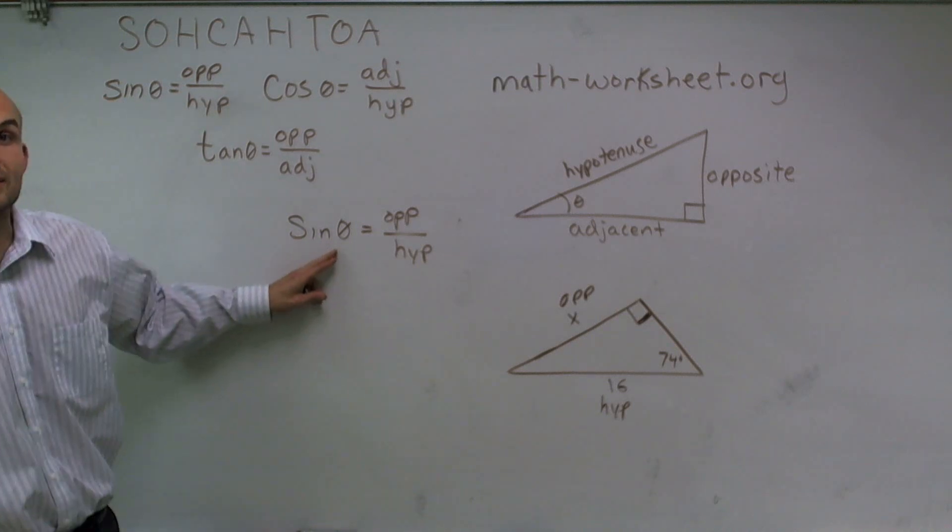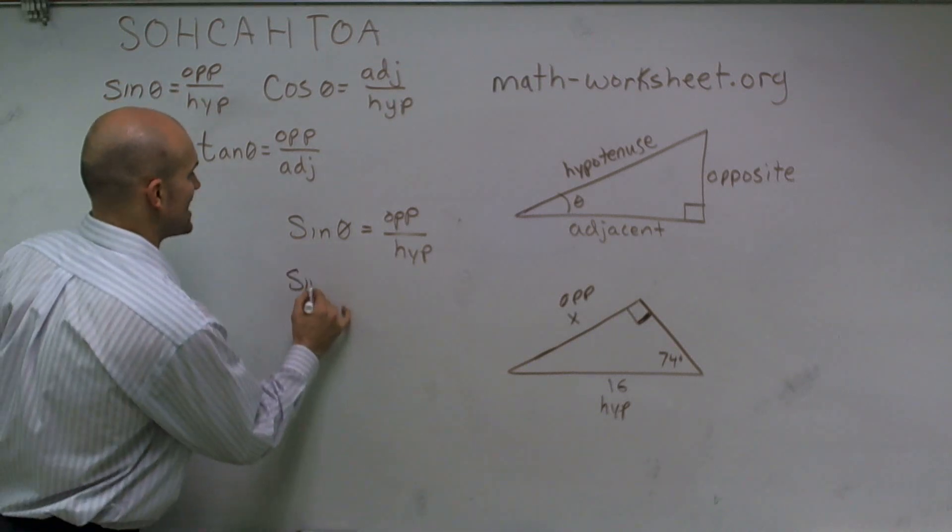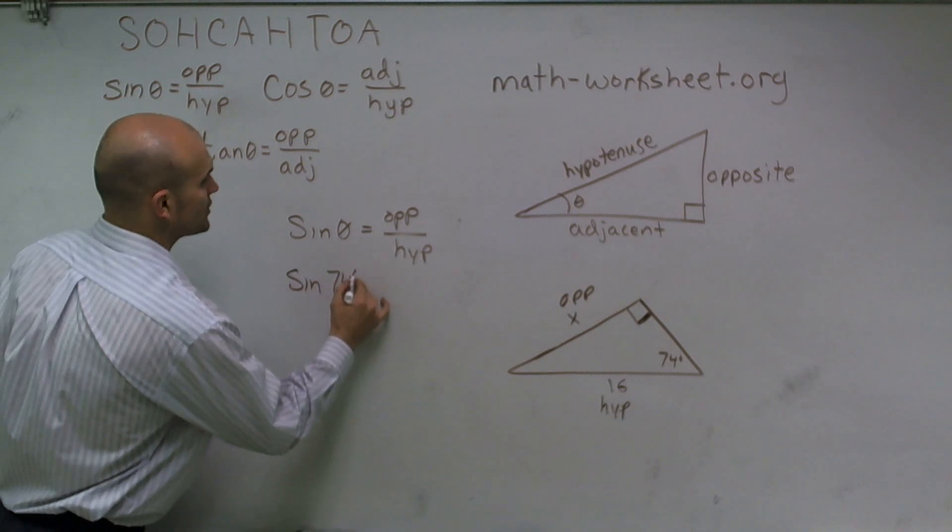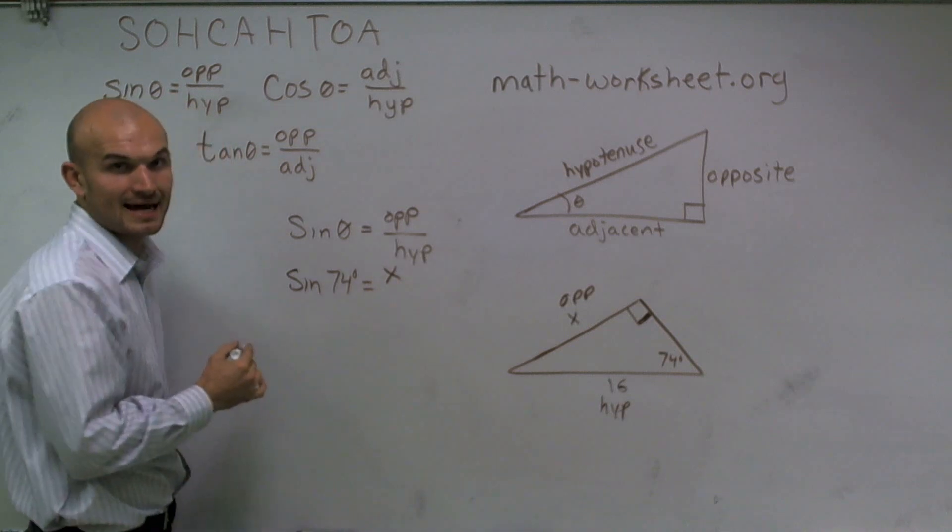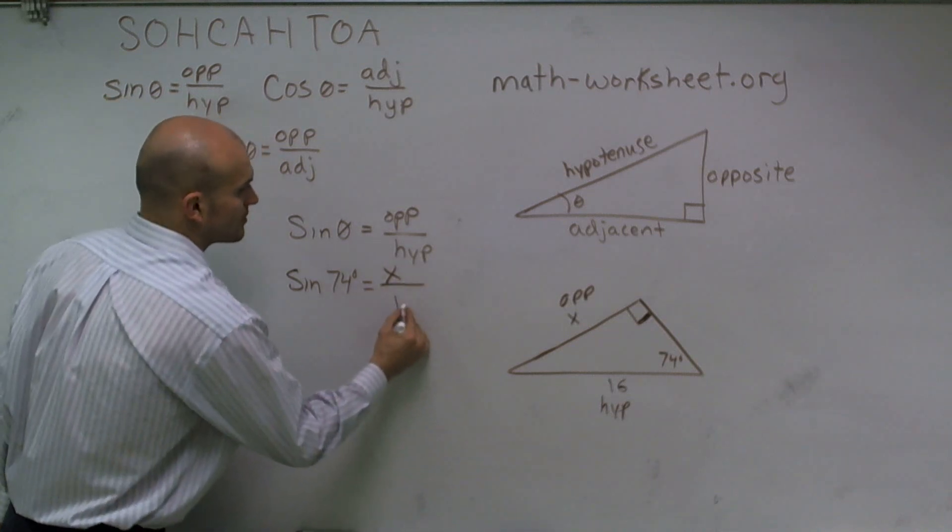Remember, theta represents your angle. So sine of 74 degrees equals my opposite side, which I do not know, so it's x over 16.